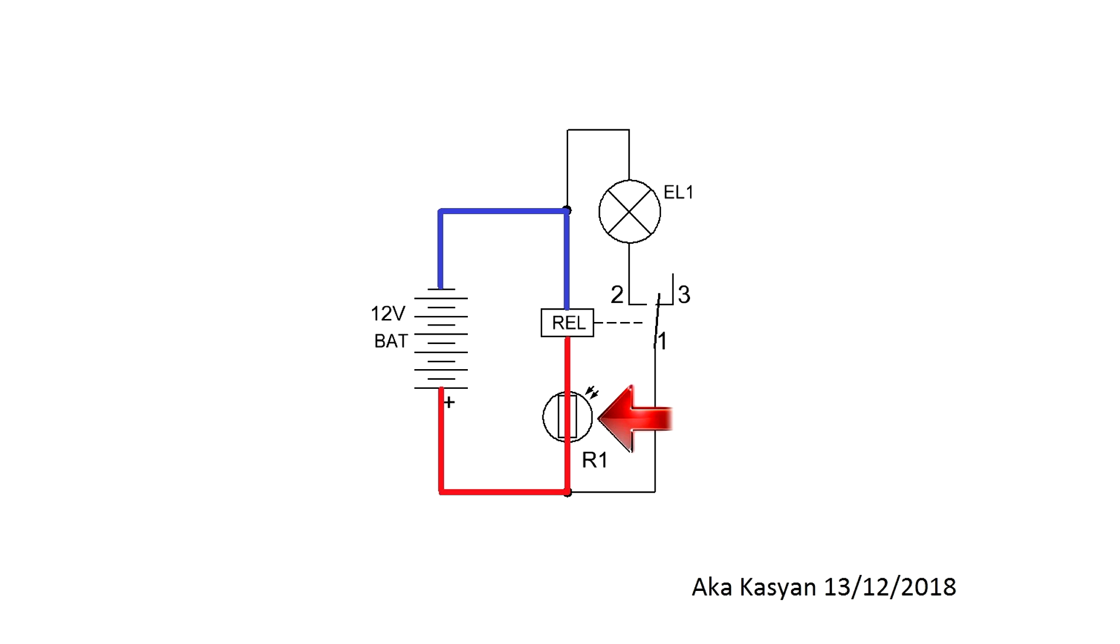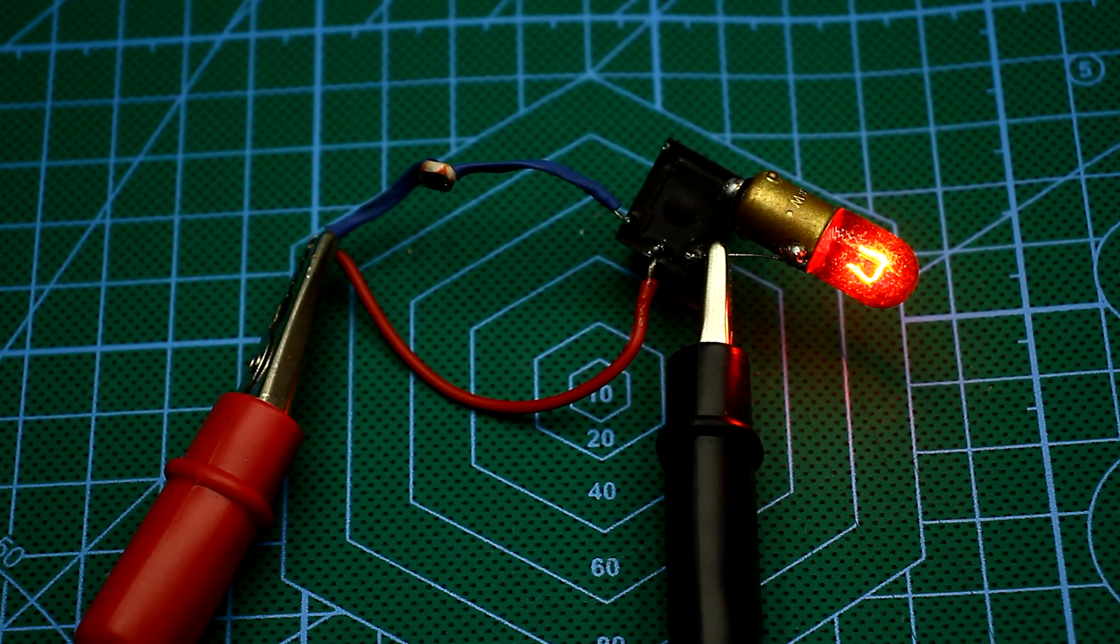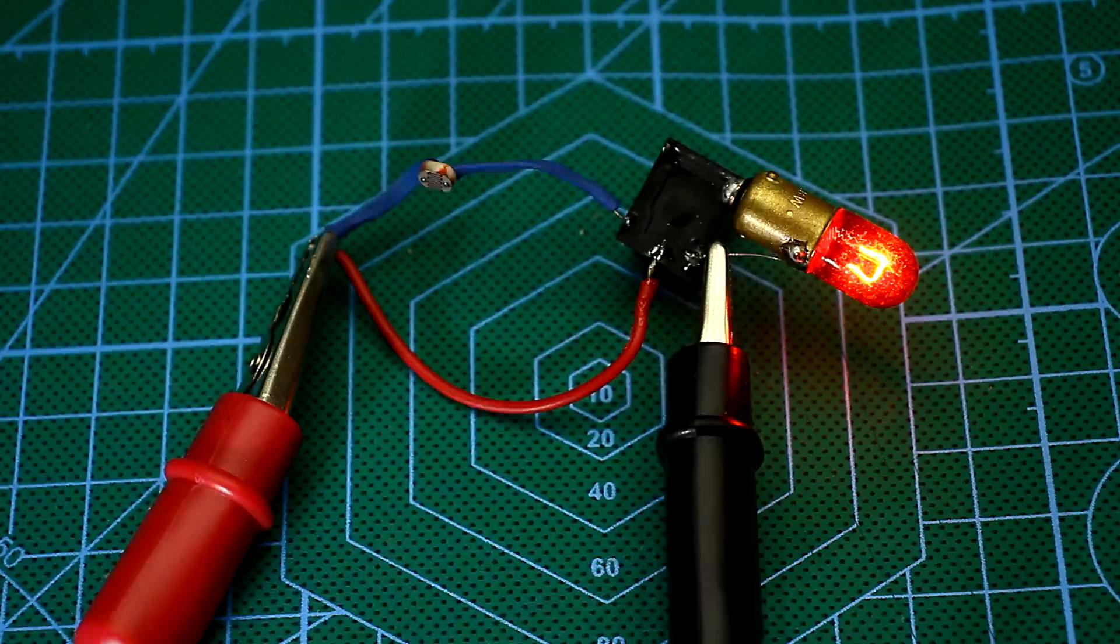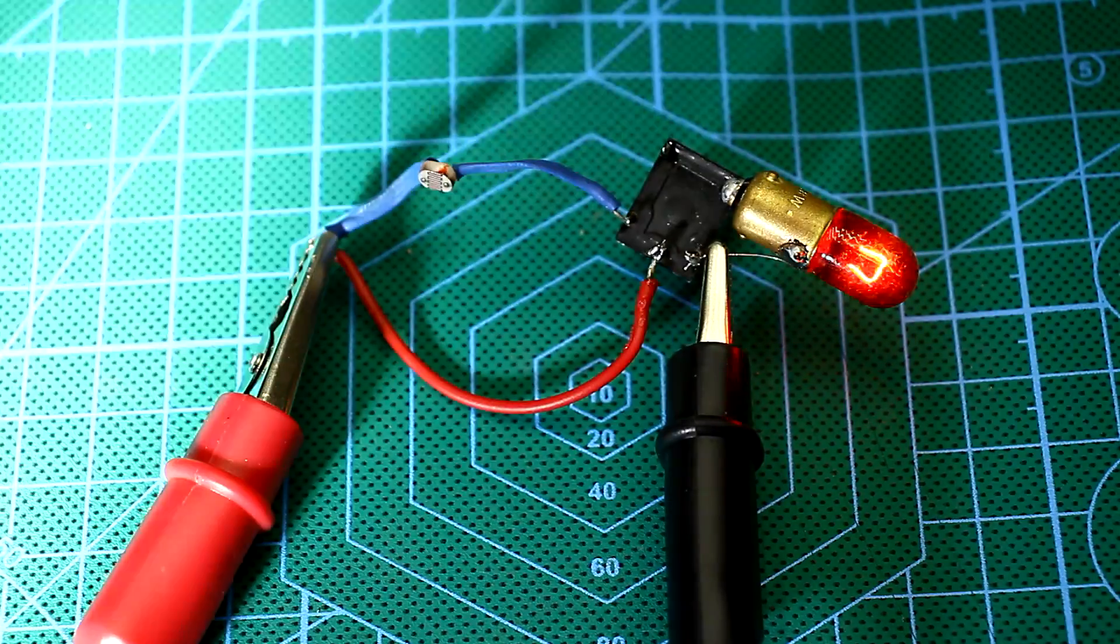With the advent of darkness, the resistance of the photoresistor begins to increase. Hence, the current in the relay coil will decrease. At some point, the current will not be enough and the relay will turn off. In this case, through closed contacts 1 and 2, the load will be connected. The light bulb will light the courtyard, door, or path. The disadvantage of the circuit, in contrast to more complex ones, is the lack of adjustment.